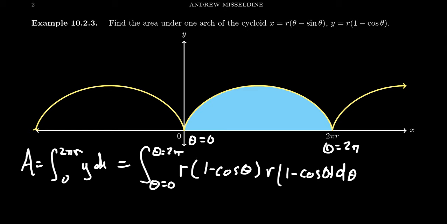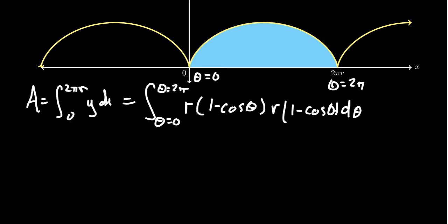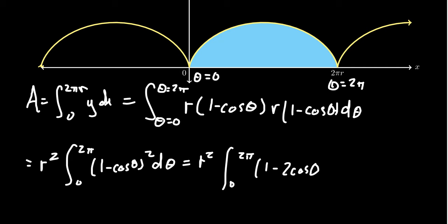And so putting things together, we're going to have an r squared that comes out front. We integrate from 0 to 2 pi. We have to integrate 1 minus cosine theta squared, d theta. Foil that out. We're going to end up 1 minus 2 cosine theta. Those ones are ready to go. But then we're going to have a cosine squared theta, d theta.